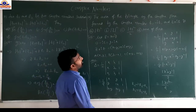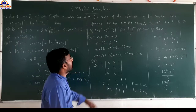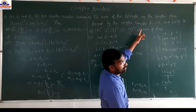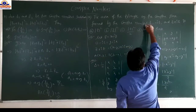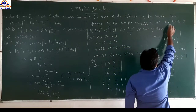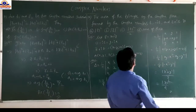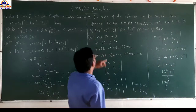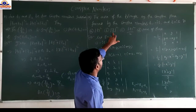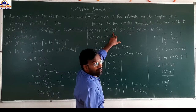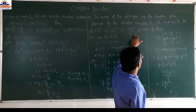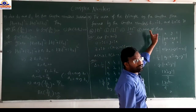The area of the triangle on the complex plane formed by the complex numbers z, minus iz, and z plus iz: option A |z|², option B |z̄|², option C |z|²/2, option D none of these.